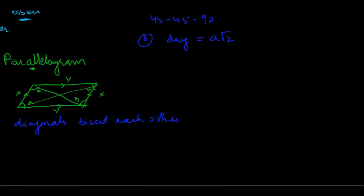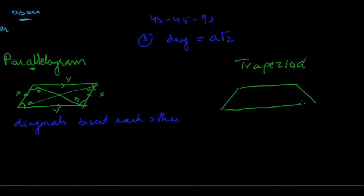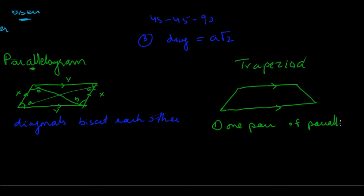Next let's look at another quadrilateral called a trapezoid. This rarely appears on the GRE, so I would not worry too much about it, but we'll do a very quick review. A trapezoid has only one pair of parallel sides — the top and the base. So you have one pair of parallel sides, and these are called bases. That's all you need to know about a trapezoid.